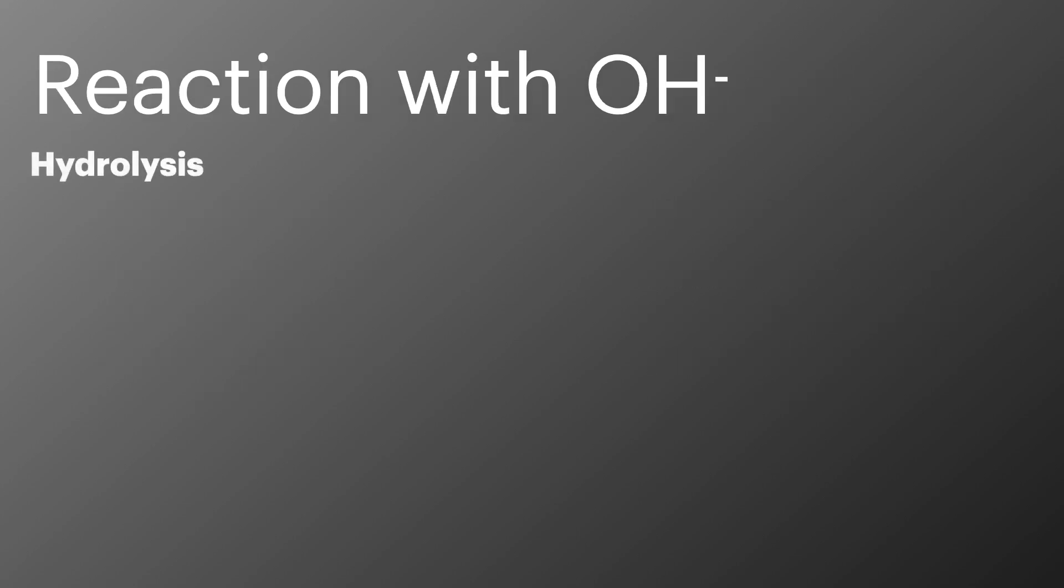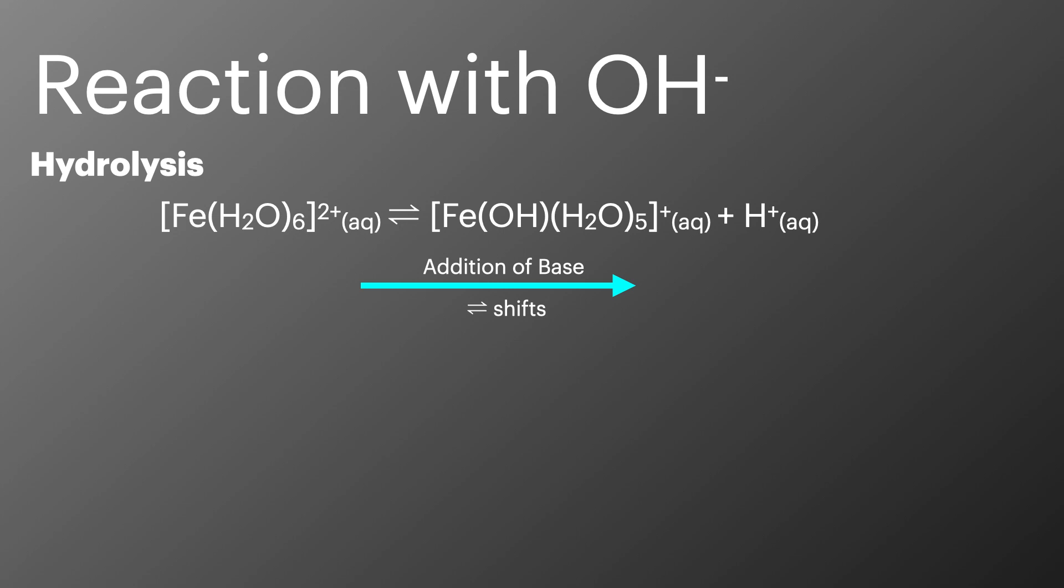We've already looked at the hydrolysis equilibriums where metal aqua ions are in solution and how this results in them forming slightly acidic solutions. In this example I've removed the water from both sides to make the equation simpler. If you were to add hydroxide ions it would shift the equilibrium further to the right as it would remove those hydrogen ions.